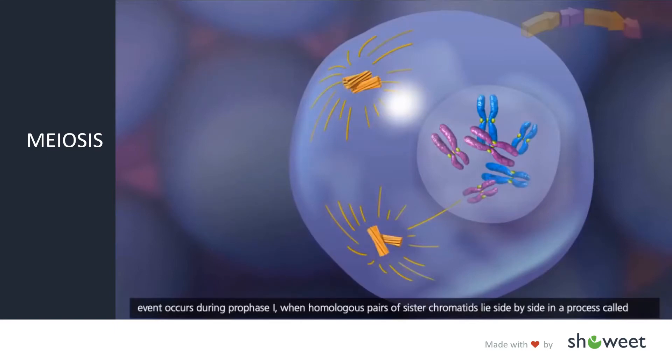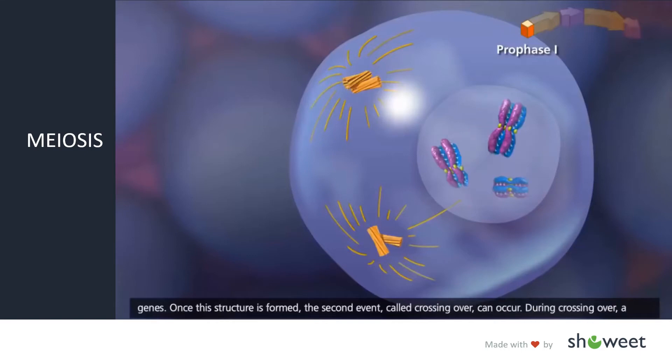The first event occurs during prophase I, when homologous pairs of sister chromatids lie side by side in a process called synapsis, forming a tetrad or bivalent. The homologous chromosomes share similar, but not necessarily identical, genes.